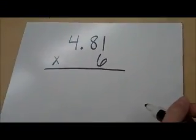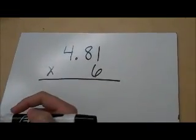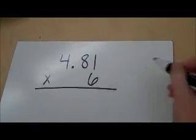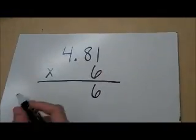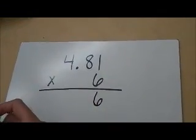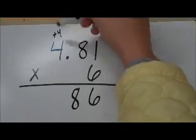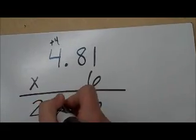The easy thing about this is just ignore the decimal for now and multiply as you would normally. So this will be a good review on multiplying numbers. So we'll start with 6 times 1, which is 6. We'll move to 8 times 6, which is 48. Carry your 4. 6 times 4, which is 24, plus 4 is 28.